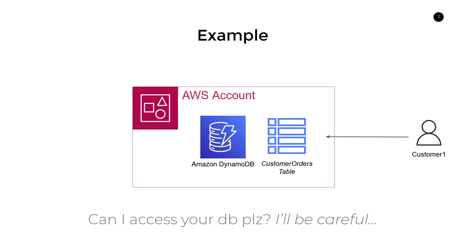Maybe some customer information such as address or social security number — any kind of personally identifying information that should be heavily guarded. So how do you only provide certain access to this particular user? This is the main idea of fine-grained access controls: we want to restrict access to only a particular subset of rows that exist in this table and only a subset of the existing attributes.